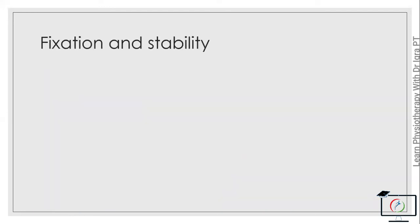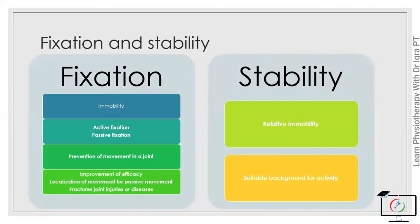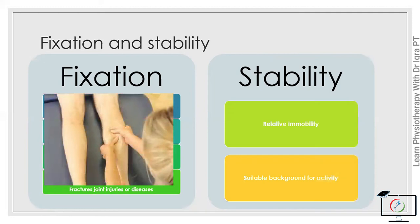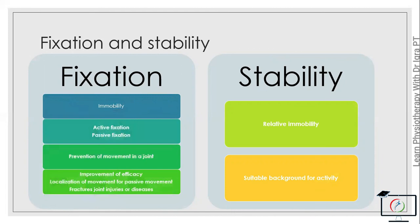Now fixation and stability. Fixation is the condition of immobility. There are two types of fixation: active fixation that is produced by the co-contraction of the muscles, and passive fixation that is done by some external source. The purpose of fixation is prevention of movement in a joint, for example, for maintaining posture or for localizing movement to a specific joint. These fixations are used to improve the efficacy of the muscle.